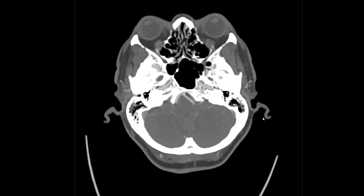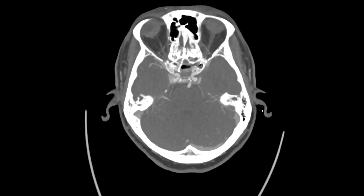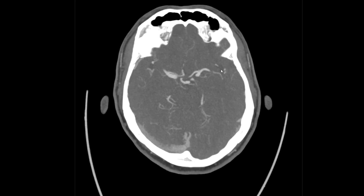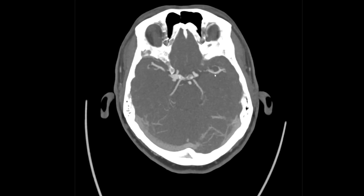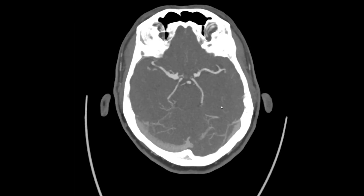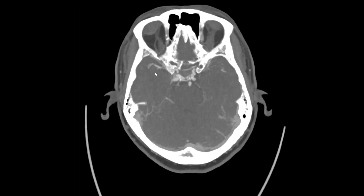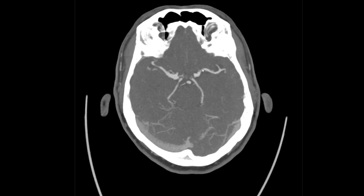MIPs, or maximum intensity projections, are a special type of 3D reformat where a thick slice is generated but only the brightest pixel value is counted. On the axial MIPs of this same case you'll recognize them by the flowing visualization of the vessels, allowing you to see their continuity. This is extremely helpful here because you can see the connectivity of that bilobed aneurysm much better. Axial MIPs also do a very nice job of laying out the MCAs in the sylvian fissures on both sides — an excellent way to see the entirety of the MCA quickly.